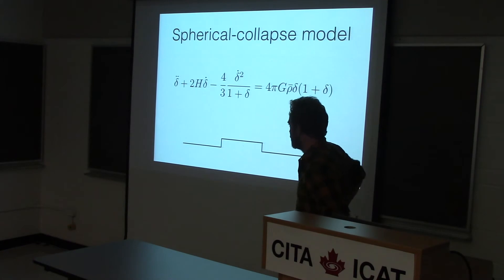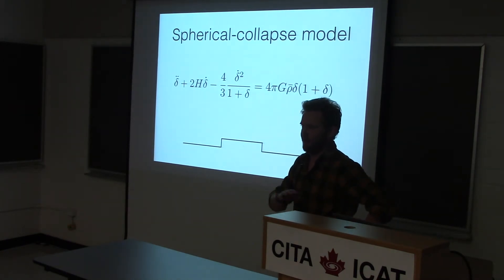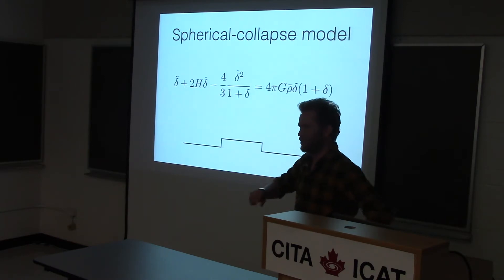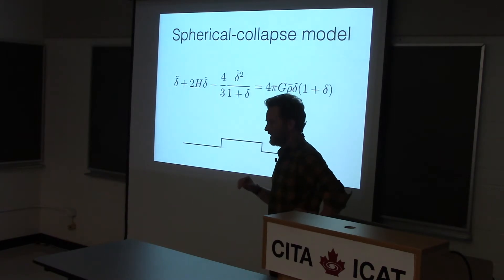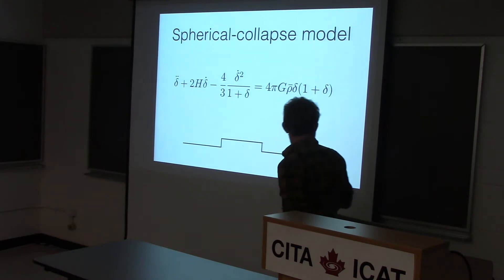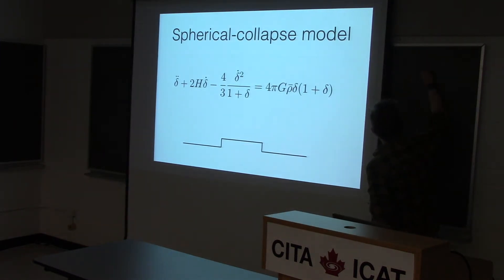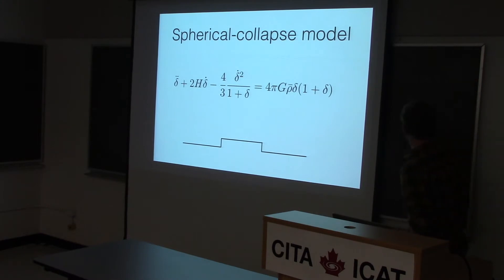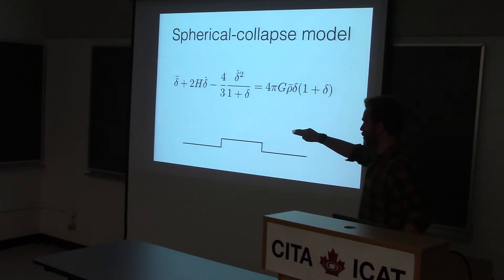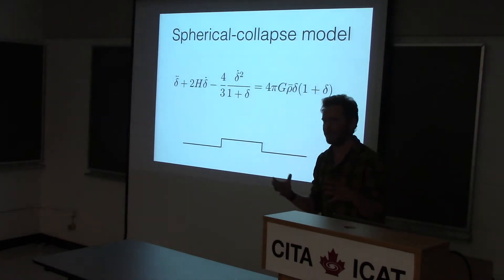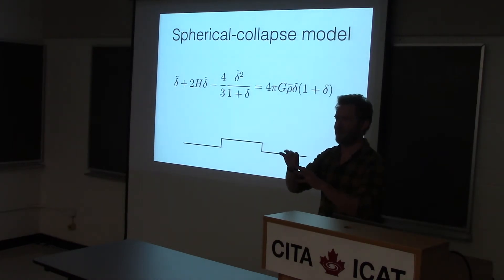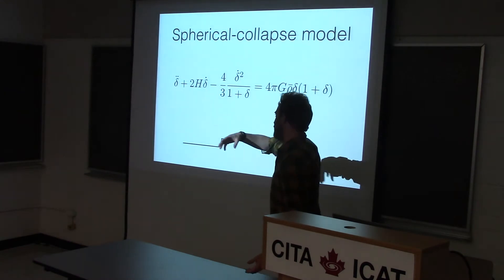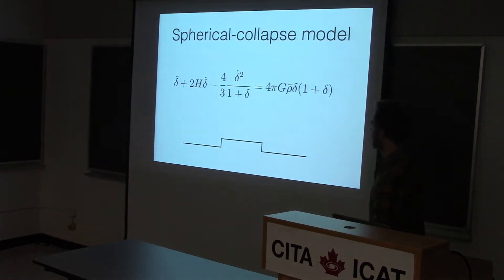The spherical collapse model — the idea is to consider a featureless or almost featureless universe containing just one spherical perturbation. Because of the symmetry, we can solve for the over-density delta, where 1+δ is just the density at some position divided by the mean density at that time. Because of the symmetry, you can do a Newtonian calculation: you put down this sphere, put a test particle on the edge, and ask how the radius of that test particle varies as it expands. You write down this differential equation for the over-density, which is a second-order differential equation in delta.